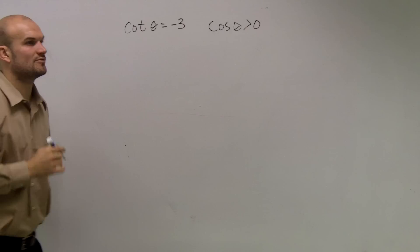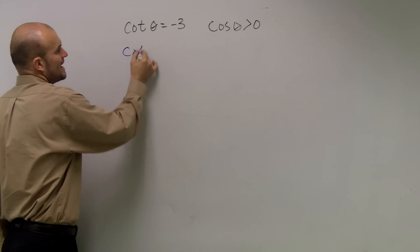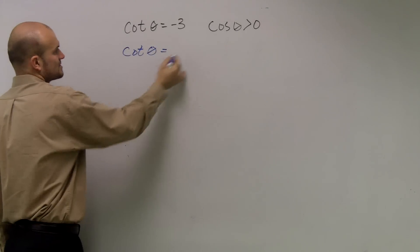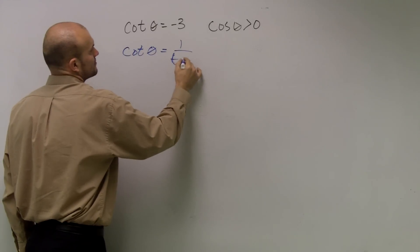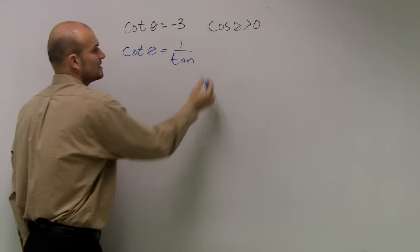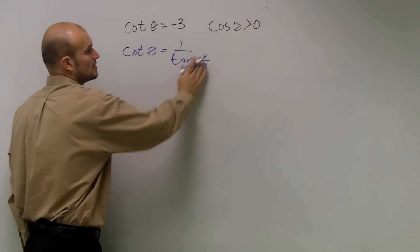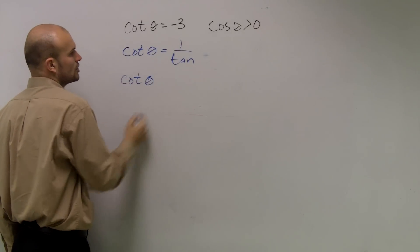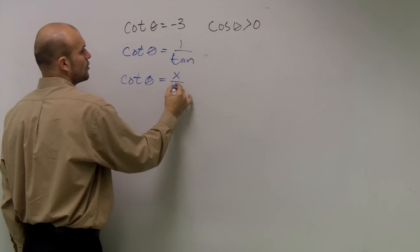So a couple things I'm going to need to remember. What is cotangent for any given point? Well, cotangent, remember, was the inverse of tangent. And remember, tangent is y over x, right? So the inverse of that, I'm sorry, the reciprocal of that, cotangent is going to be x over y.